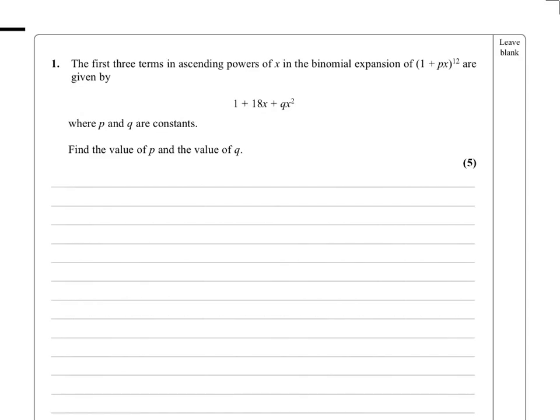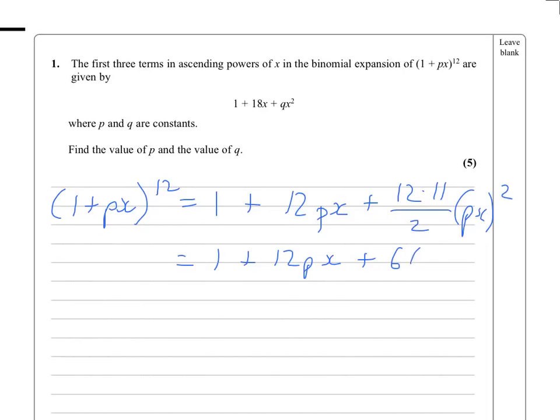In this question we need to expand the first three terms. For any binomial expansion, 1 plus something times x to the power of 12, we get 1 plus 12 times px plus 12 times 11 divided by 2 times px squared. And that gives us 1 plus 12px plus 66p squared x squared.